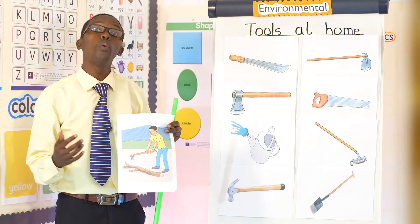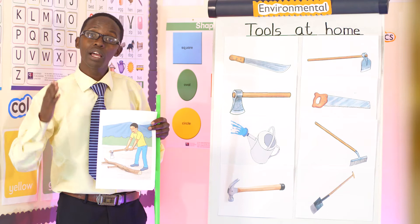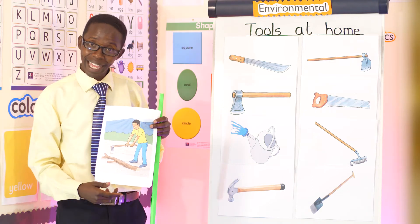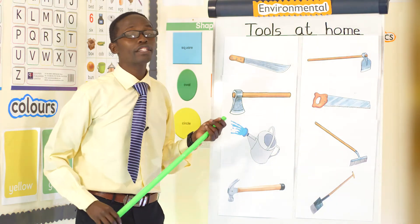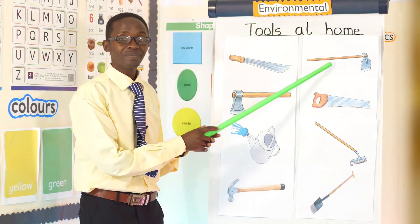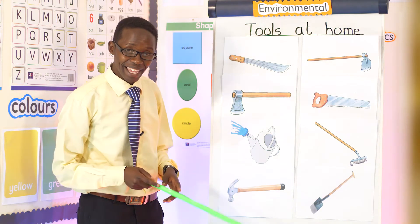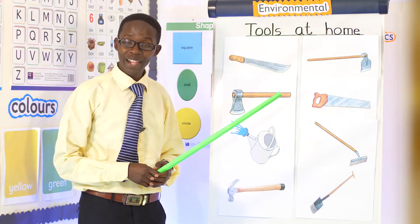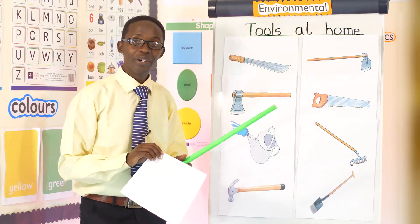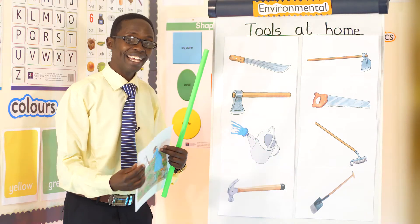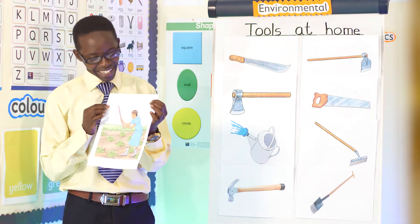So that is the work of an axe, to cut logs. Very good. Still we have another tool here. Look at it. What is this? Yes, Mary, it is a jembe.